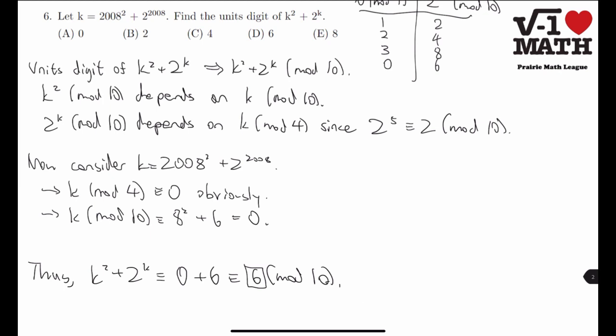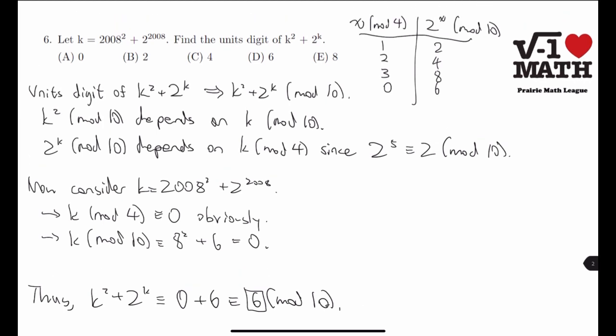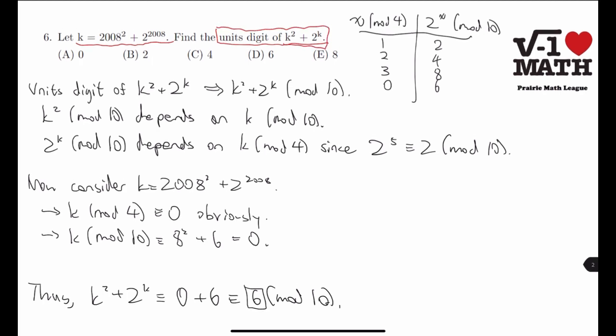All right, so for problem number 6, we have some number k equals 2008 to the power of 2 plus 2 to the power of 2008. And we should find the unit's digit of k² plus 2^k. Now, we first consider this thing. And we're going to use a bit of modular arithmetic here to simplify the notation. If you don't know what modular arithmetic is, I would highly recommend you to search it up, because this is a very invaluable tool in later math, more advanced level math contests.